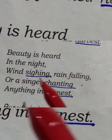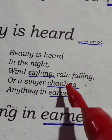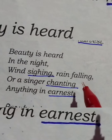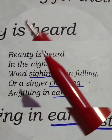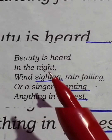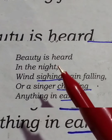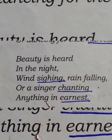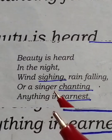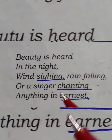Beauty is heard in the night when sighing, rain falling, or a singer chanting — anything in earnest. Sighing means the sound of a deep, loud breath — breathing noisily. Chanting means singing or repeating a phrase continuously. Earnest means sincere or serious. In the second stanza, the poet says beauty can also be heard at night — in the whistling sound made by passing wind, in the sound of falling rain, and in the melodious song sung by a singer from the depth of his heart. One can also hear the beauty of a person in their sincere and serious effort.